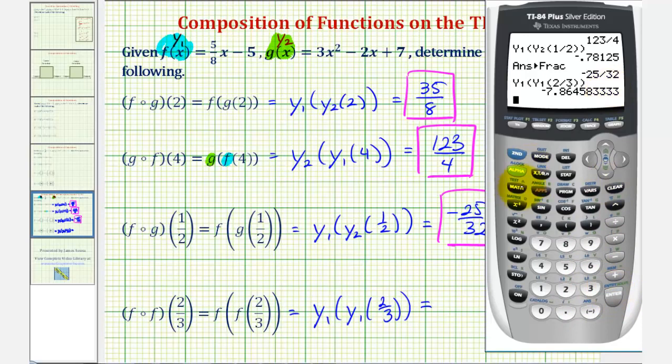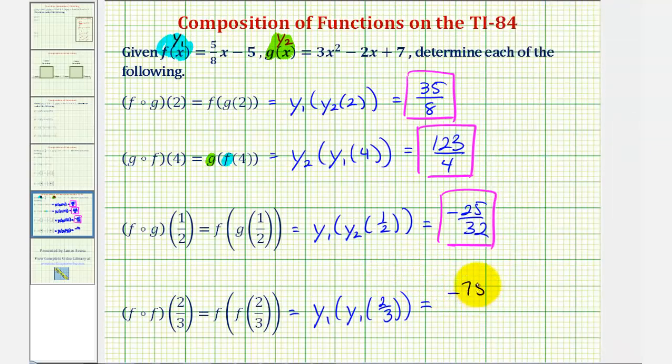And one more time. Math. Enter, enter to convert to a fraction. Negative seven hundred fifty-five over ninety-six. F of f of two-thirds equals negative seven hundred fifty-five divided by ninety-six. I hope you found this helpful.